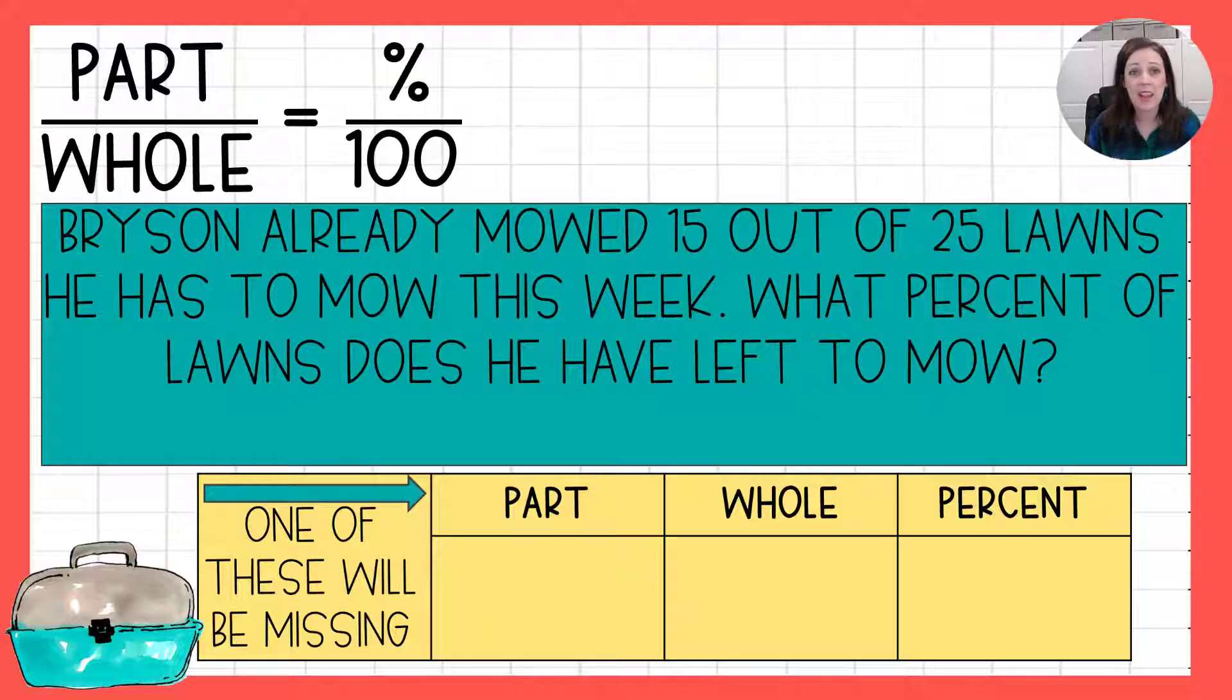How many of you just said the part was 15? Yeah, common mistake. I told you this one will trick you. He's already mowed 15 out of 25 lawns. Those are done. Check them off the to-do list. They are complete. The question says, how many does he have left to mow? So if he's already mowed 15 out of 25, the part is 10. That's how many he has left to mow. The whole, we know. He has 25 in all. And then the percent is what the question is asking. So that is our unknown.